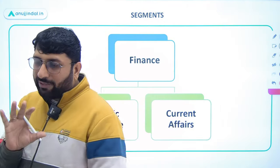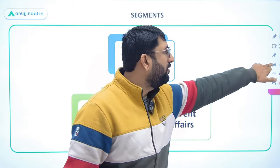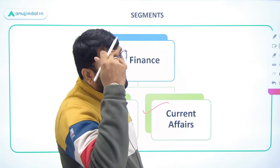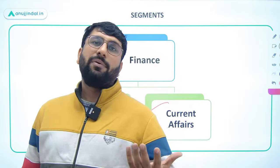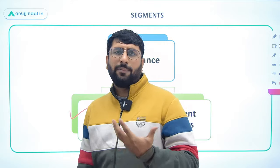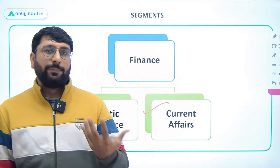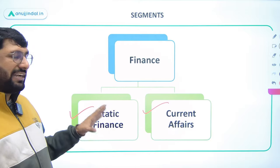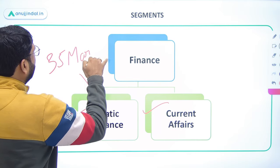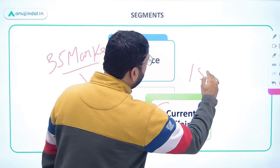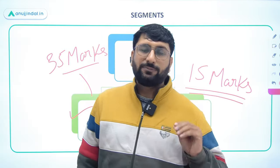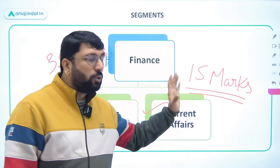There is also one important element: your questions are divided into two parts — static finance and current affairs finance. Finance keeps getting updated; for example, the four-scale layer framework for NBFCs was recently devised, CBDC and digital currencies are new concepts, and a lot of initiatives are being introduced by the government and RBI. You will find questions from both the current affairs section and the static portion. Broadly, around 35 marks weightage comes from the static portion and approximately 15 marks from current affairs.